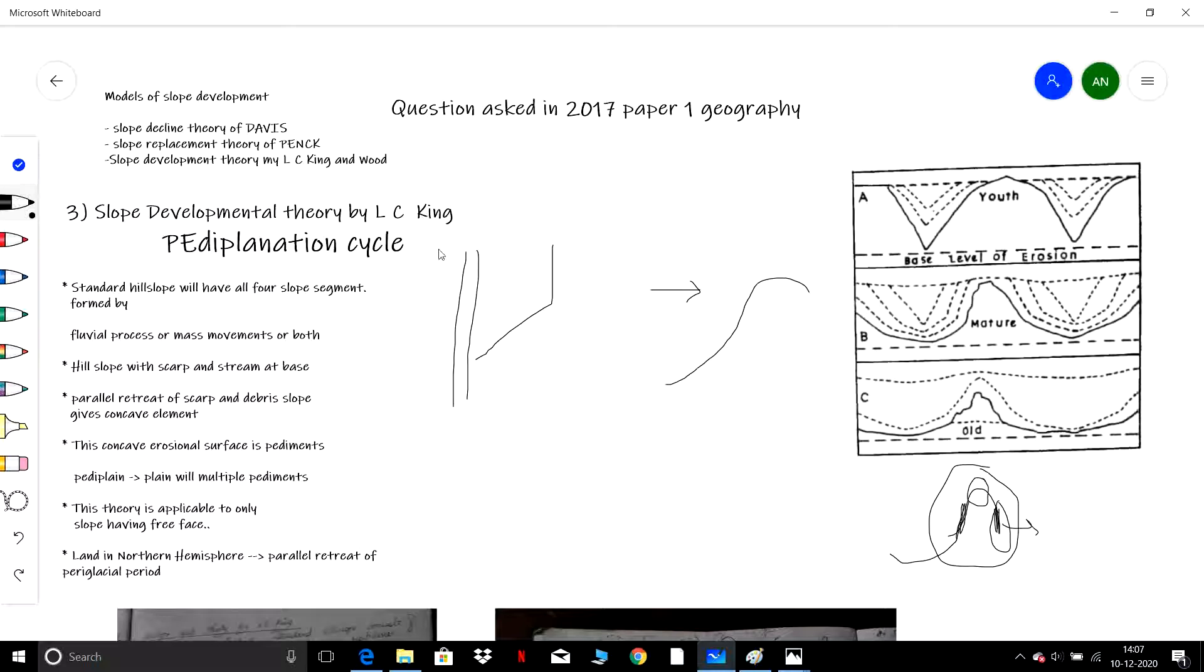In explaining his concept, L.C. King took a hill slope which has a scarp—scarp means free face. This scarp or free face undergoes weathering where a superficial layer of the rock is weathered and falls down. Following this, it forms a debris slope at the lower segment of gentle gradient.